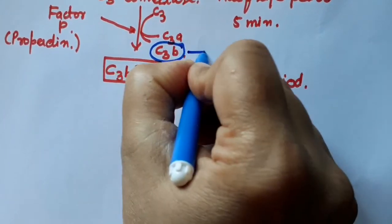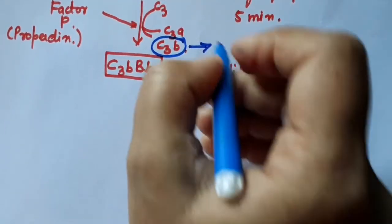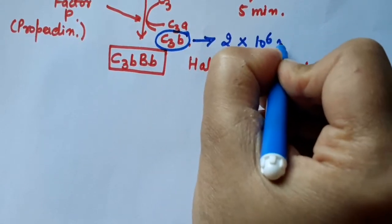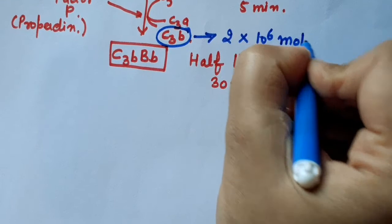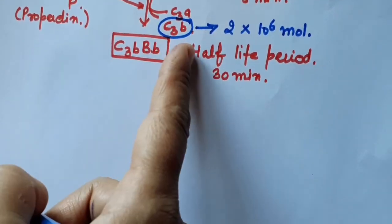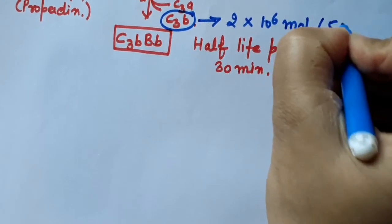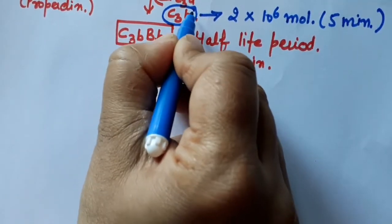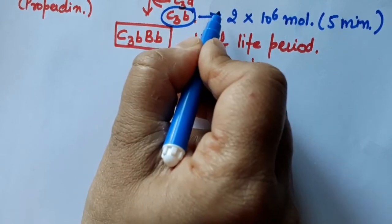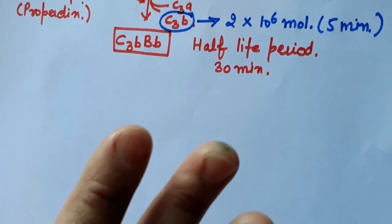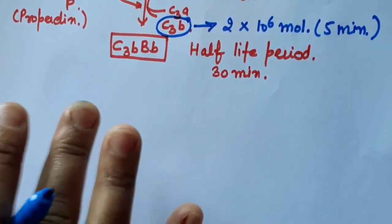In these 30 minutes, many C3 convert to C3A and C3B which is the active component. In 5 minutes, 2 to the power of 10 to the power of 6 molecules generate. So many molecules convert in only about 5 minutes, and all these C3B molecules join to the pathogen surface. So opsonization of pathogen takes place.